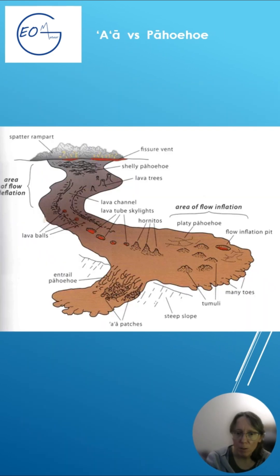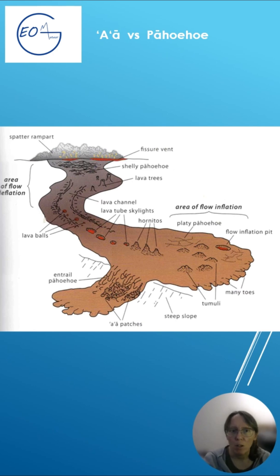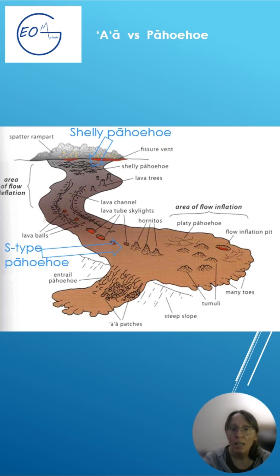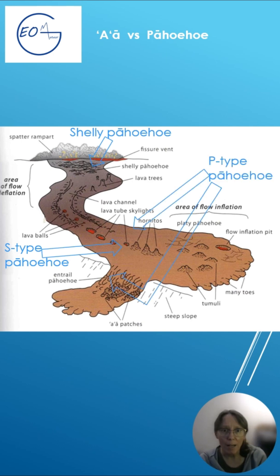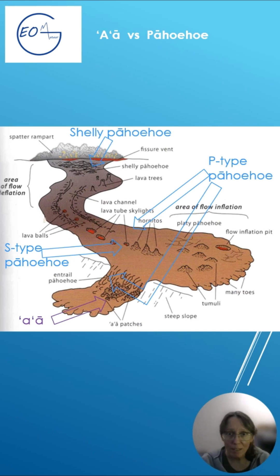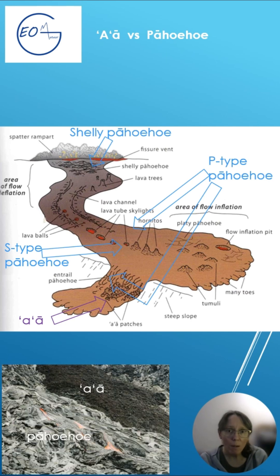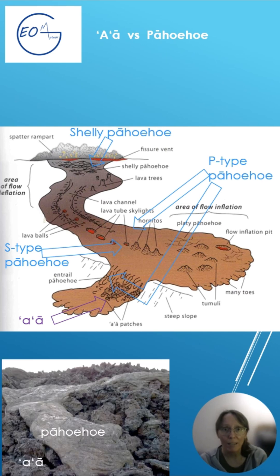Looking at this figure, please notice some typical occurrences of both types of lava flows. Shelly Pahoehoe forms near fissures. S-type Pahoehoe develops in stable insulated flow interiors. P-type Pahoehoe appears at flow margins and on steeper terrain. Areas with shear stress such as cliffs and steep terrain often produce Aa lava flows. Pahoehoe and Aa flows can be close neighbors in the same volcanic landscape.